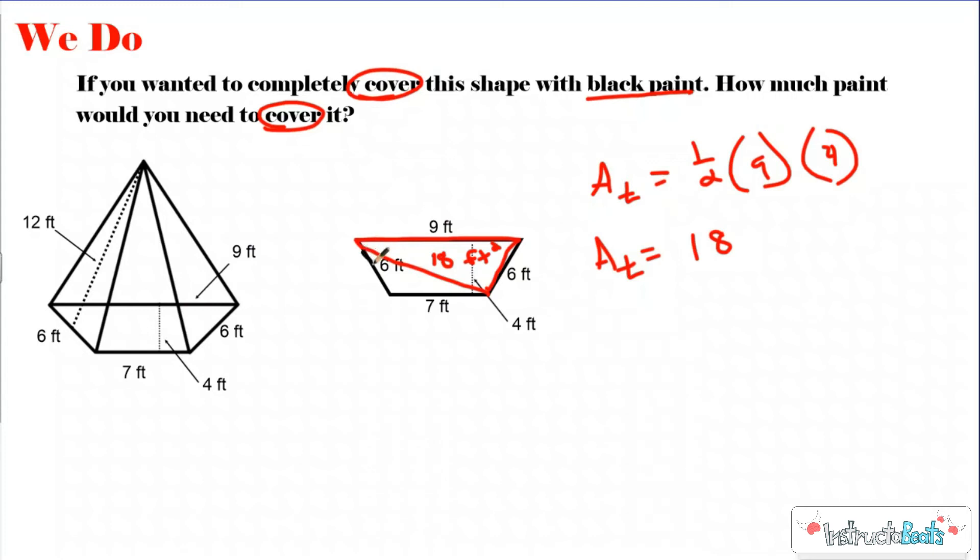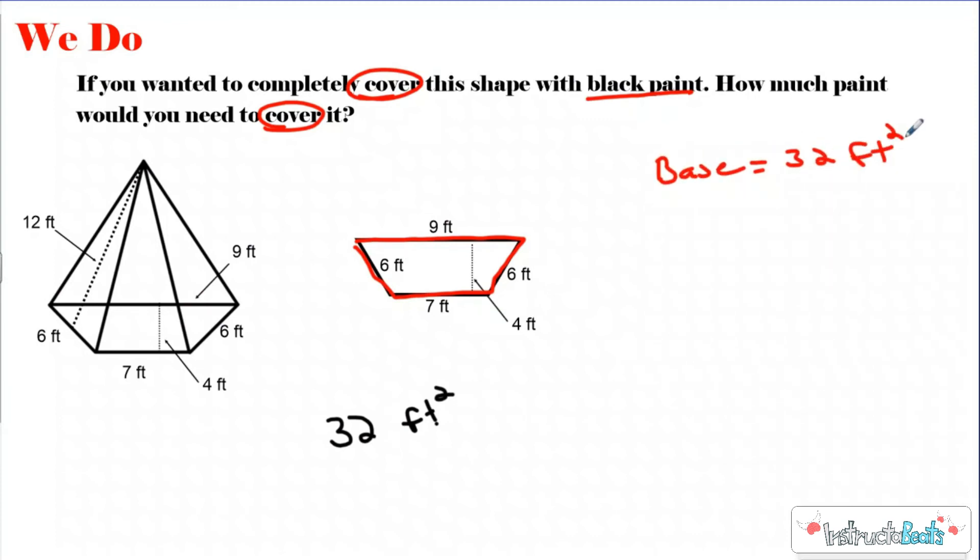The second part, the second triangle that I just made, is going to have a height of 4. My area of my black triangle is going to be 1/2. I know the base of this triangle would be 7. My height was 4. And when I find the area of that, that would give me an area of 14 feet squared. When I add these together, my base has a total area of 32 feet squared. I'll put my base over here, equaled 32 feet squared. And now, I need to find the area of all my lateral sides.